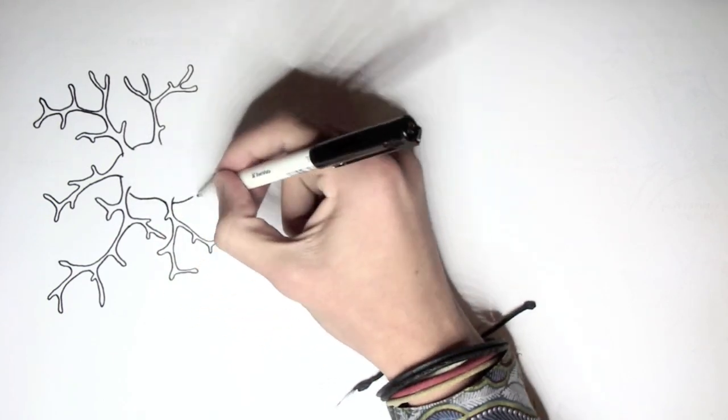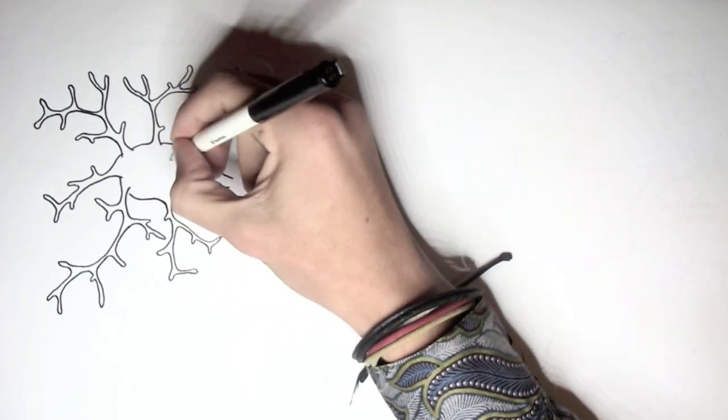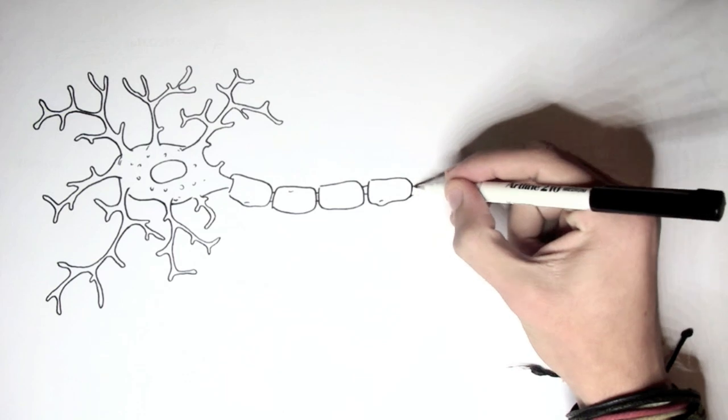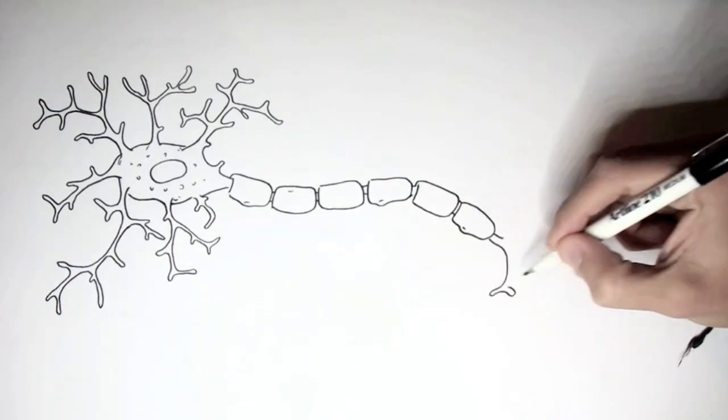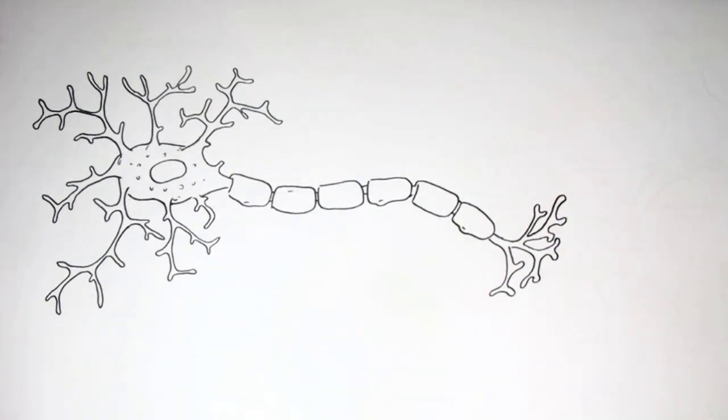Neurons also send out signals or information. When we move our hands, every time we breathe, it's because of commands being sent via efferent neurons. So neurons are a big deal. And because of this, we have billions of neurons in our body.